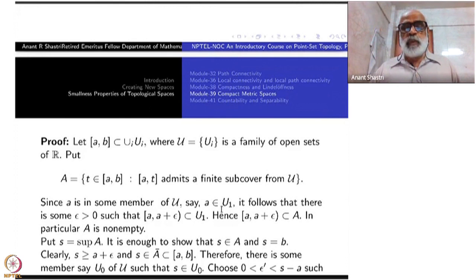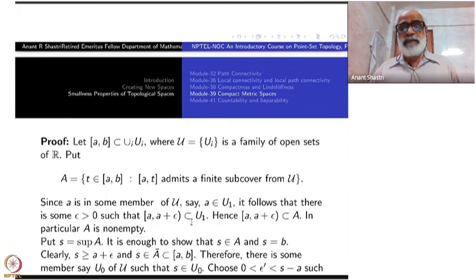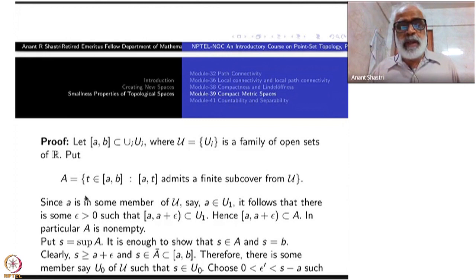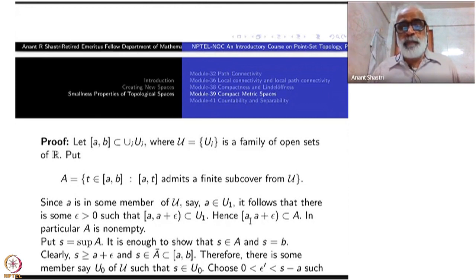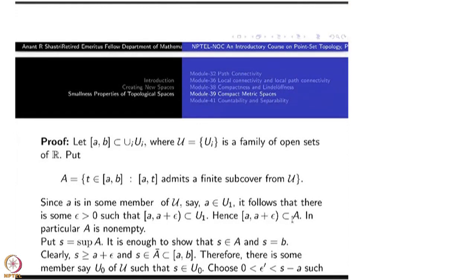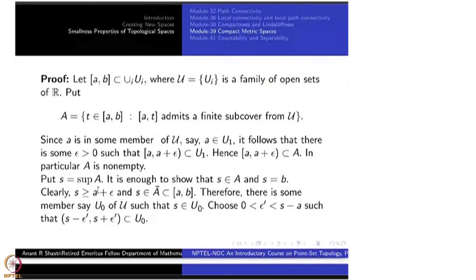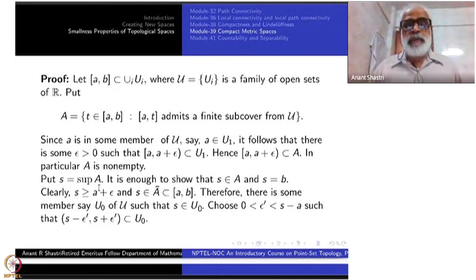Each element in [a, b] is in one of the U_i; in particular, a is inside one of them — say U₁. It follows that there is some ε > 0 such that [a, a+ε] is contained inside U₁, by the definition of open subsets in R. So everything up to a+ε satisfies this property, and this half-interval is contained inside the set A. In particular, A is non-empty. Now put S equal to the supremum of A. Since A is non-empty, this is a finite number inside [a, b].